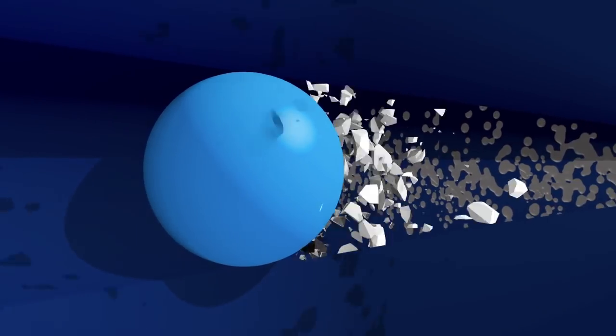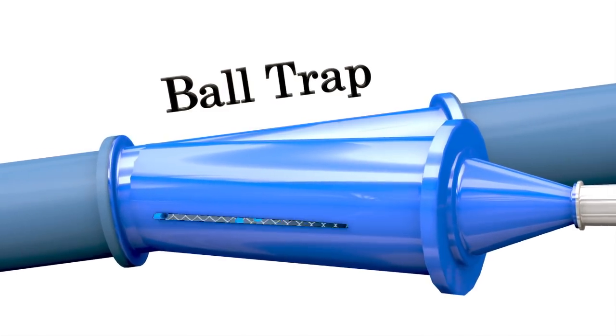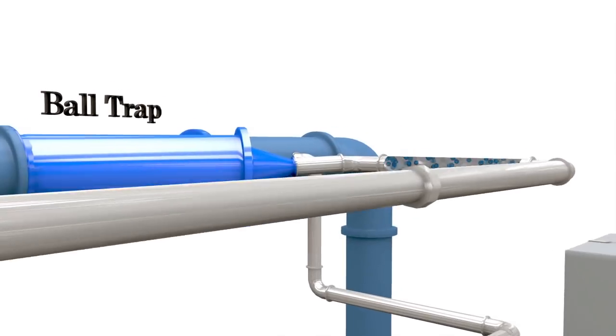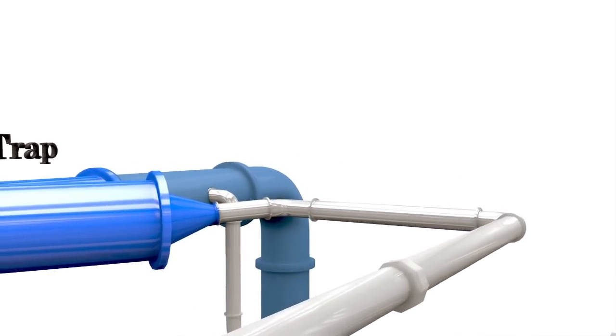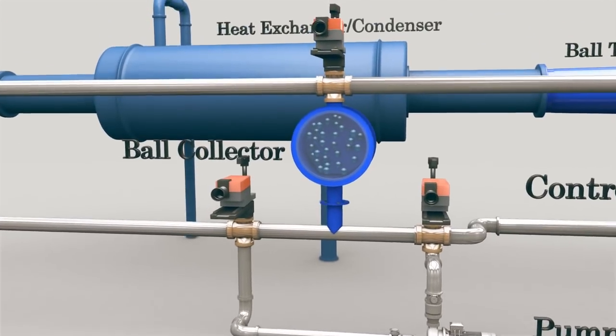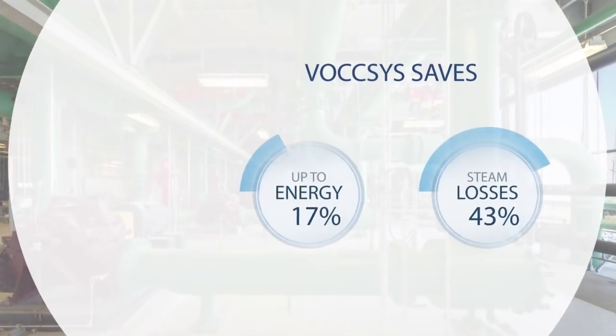The balls then exit the heat exchanger and are collected in a ball trap that prevents any ball loss. The balls are then forced back into the collector where they are rinsed clean and rest until the next cycle.